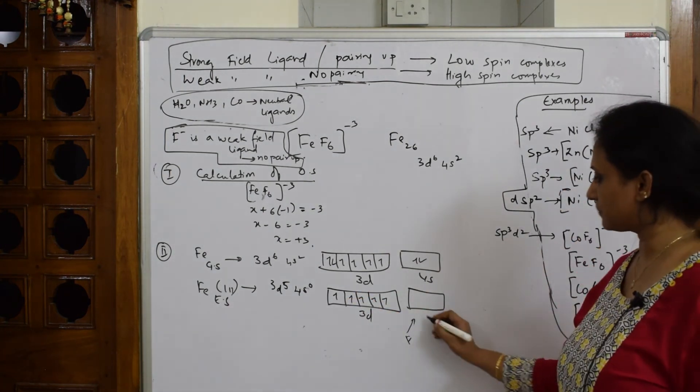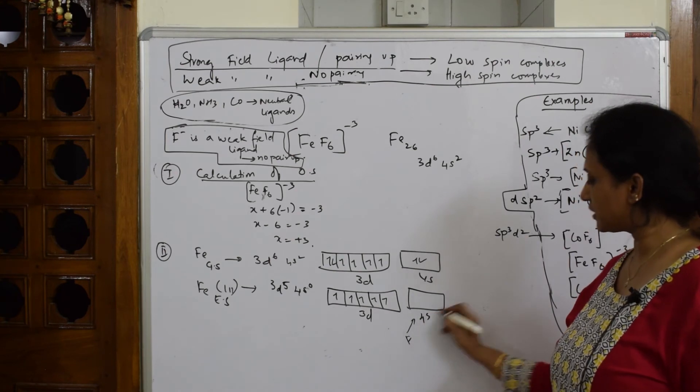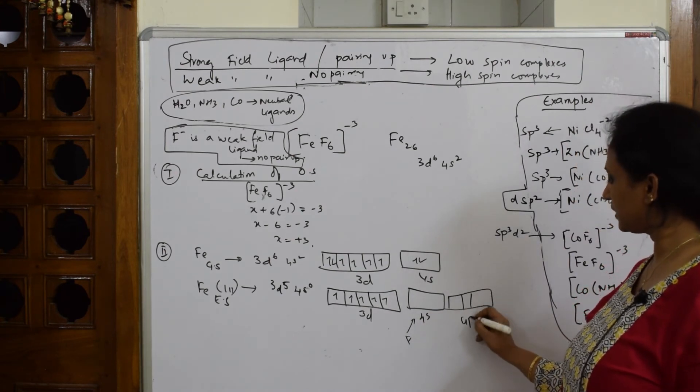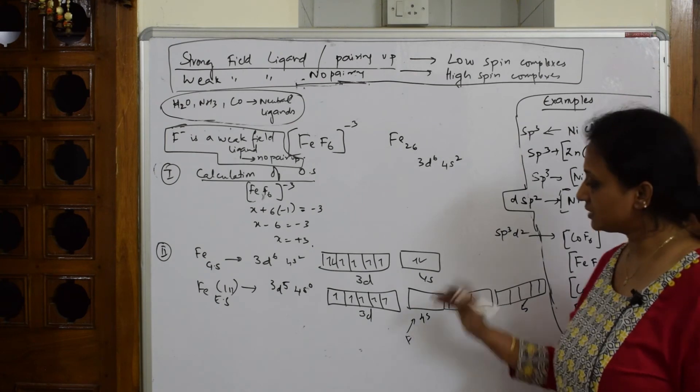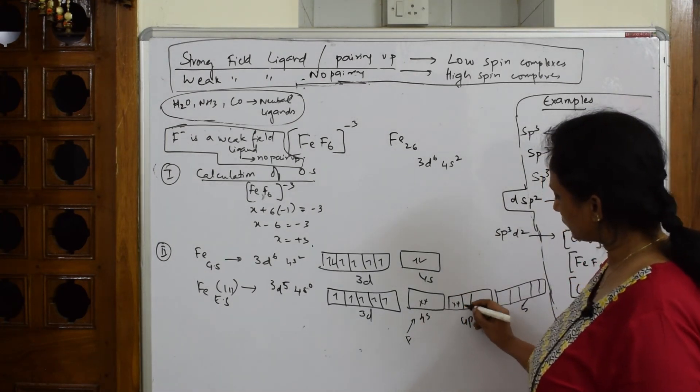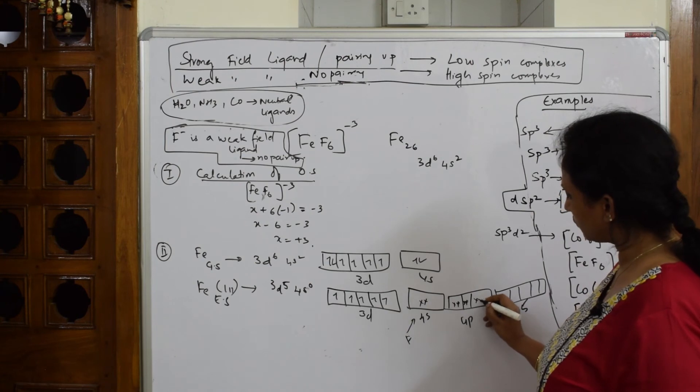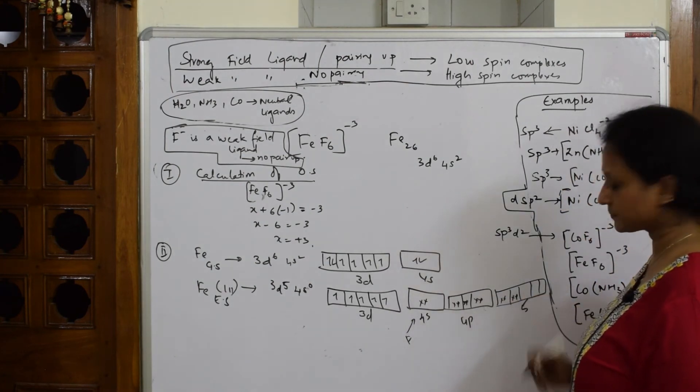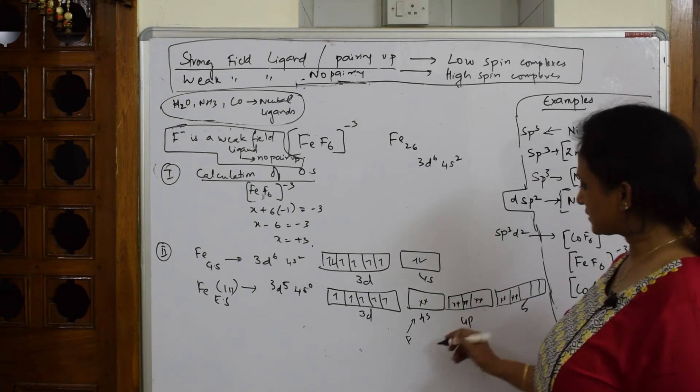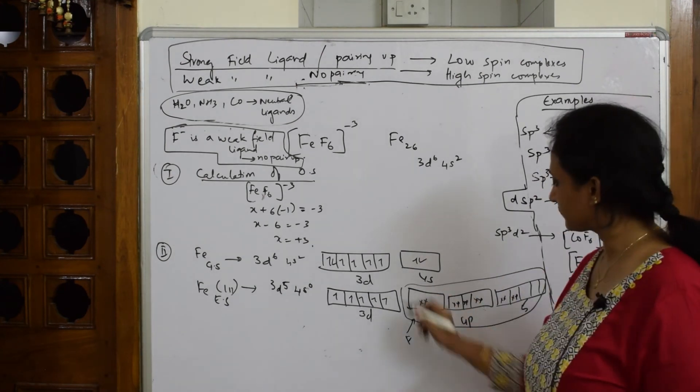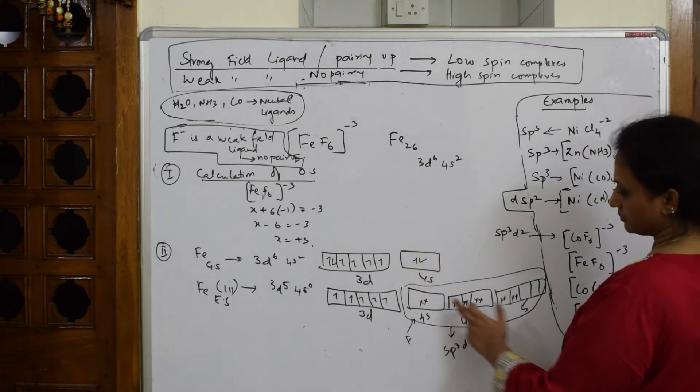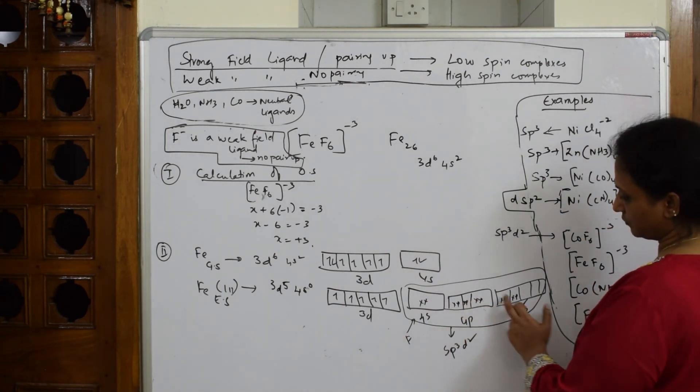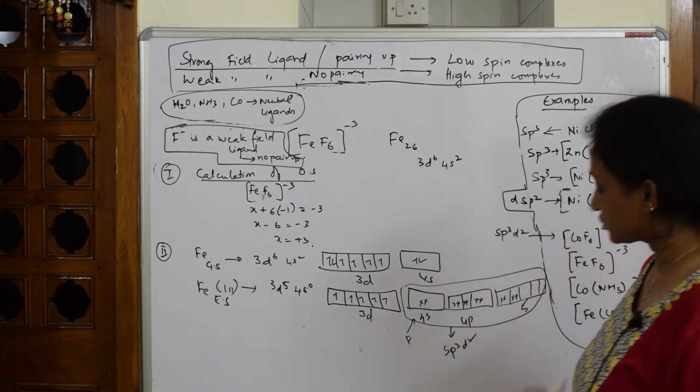How many? Six, isn't it? One. This is 4s, 4p. Your d. Now how many are there? Six. 1, 2, 3, 4, 5, 6. So what is this hybridization? Now all will hybridize. What type of hybridization? S, p3, d2. 1, 2, 3, 4, 5, 6 - six fluorines. Now that's over.